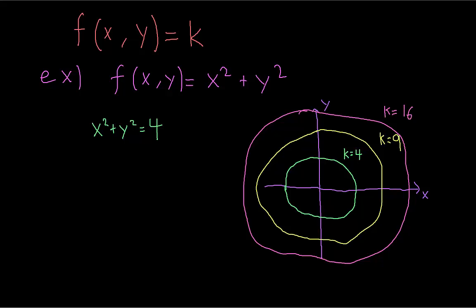They represent all of the points where the output is the same. If I'm walking around the green circle, then the value of the function stays at 4. If I jump up to the yellow circle, then every point on that yellow circle yields an output of 9.